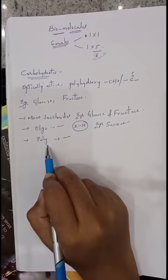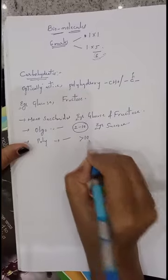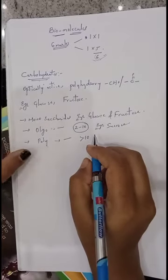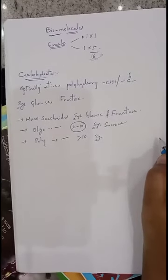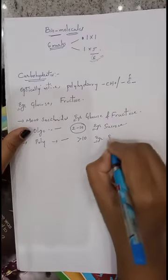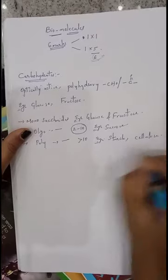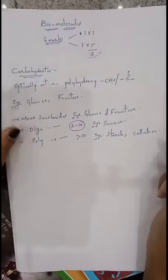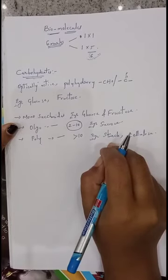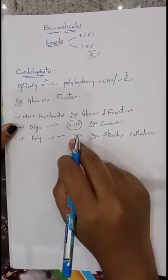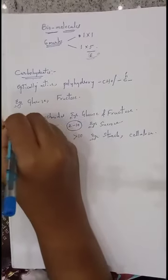Finally, polysaccharides. Polysaccharides can give more than 10 monomeric or monosaccharides on hydrolysis. Then those are said to be polysaccharides. Examples for polysaccharides are starch and cellulose. These are containing more than 10 monosaccharides in their structure. That is why whenever they undergo hydrolysis they give more than 10 monomeric or monosaccharides. So those are said to be polysaccharides. That is about the first classification.